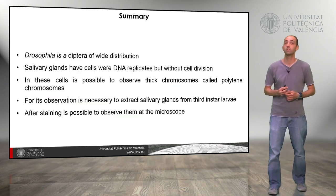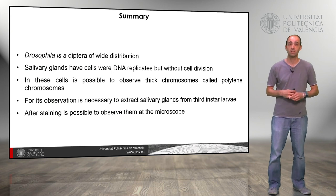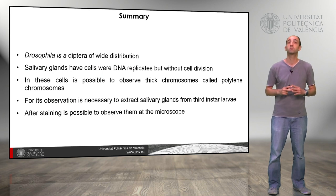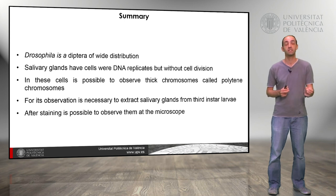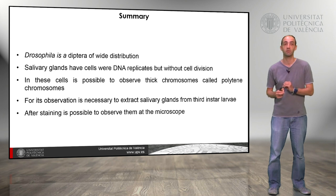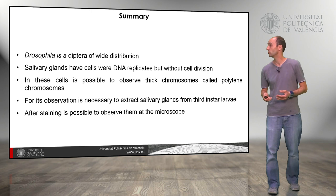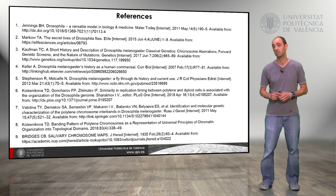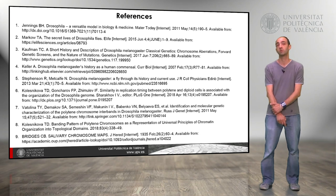As a summary: Drosophila is a species of wide distribution. The salivary glands have cells where the DNA replicates but without cell division. In these cells it is possible to observe thick chromosomes called polytene chromosomes. For observation, it is necessary to extract the salivary glands from the third instar larva, and after staining them with orcein, it is possible to observe them at the microscope. Here we have some references you can use to explore this subject further — and with that we finish this learning object. Thank you very much.